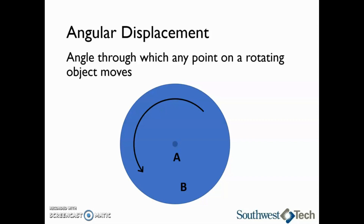However, if we are looking at linear displacement, which is the straight line distance each point moves through, the linear displacement of point B is going to be much greater because that point travels a larger straight line distance in one revolution. The linear displacement is dependent on how far from the radius of the rotating object each point is located.